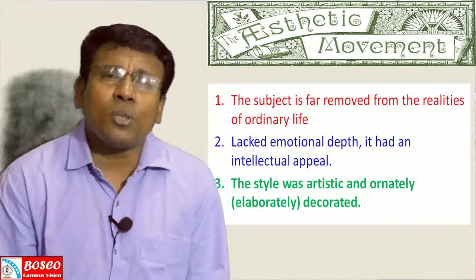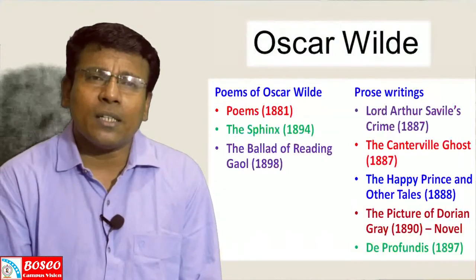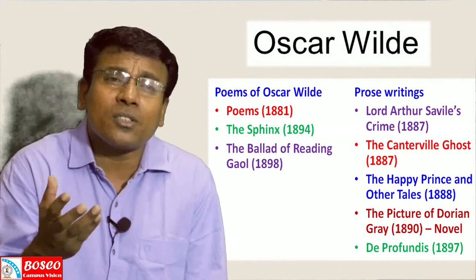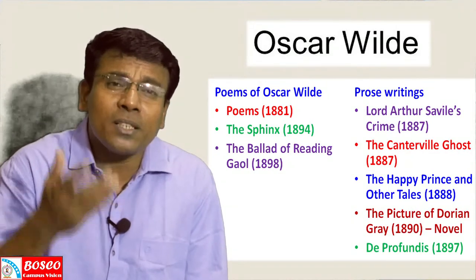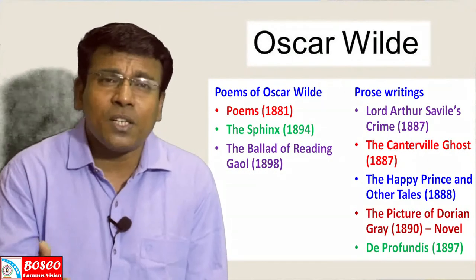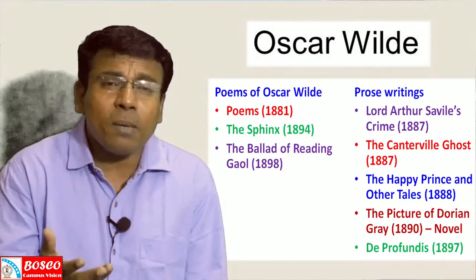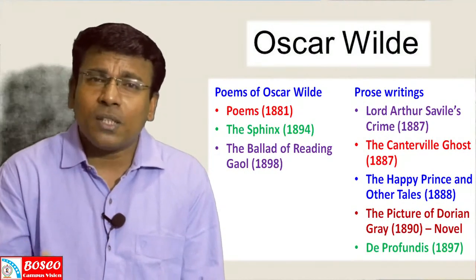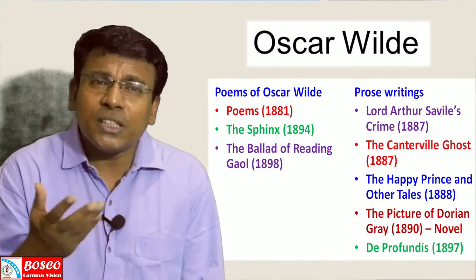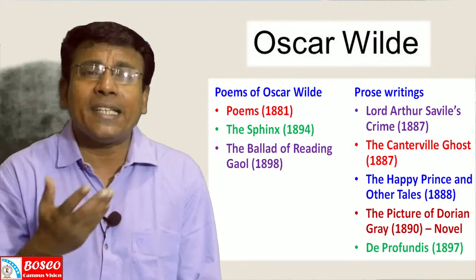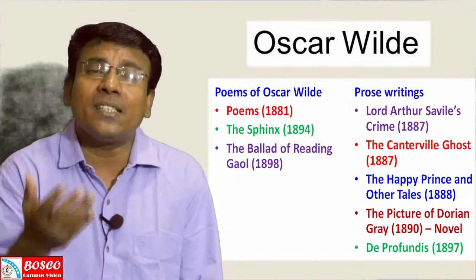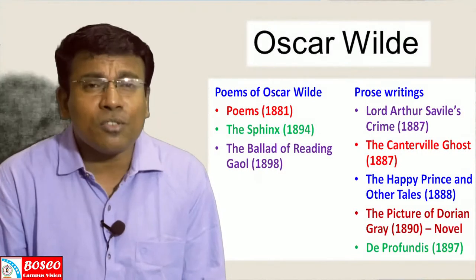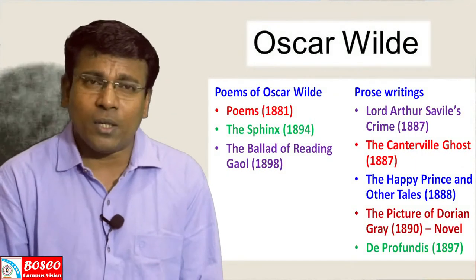Among Oscar Wilde's poems, in 1881 he published a collection simply titled Poems. The Sphinx was published in 1894, and The Ballad of Reading Gaol was published in 1898.